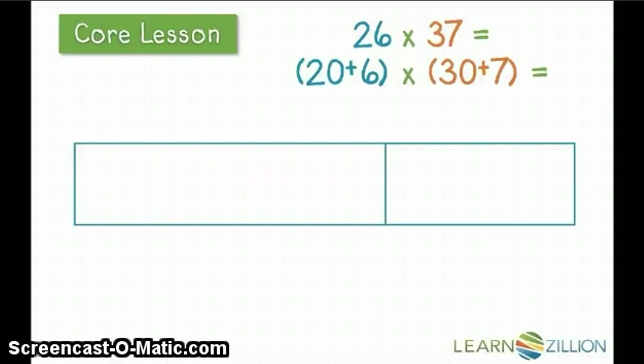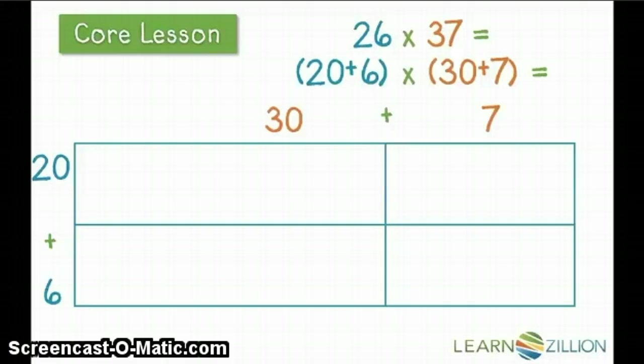Just as before, we're going to write it in expanded notation, giving each place value its own section. This time, because our amount of groups is not a single digit, we're going to record 26 in expanded form as well, giving both place values, the 20 and the 6, their own sections.